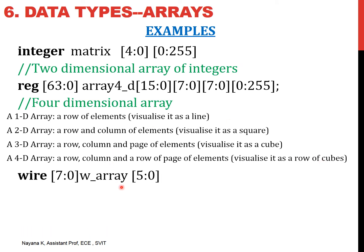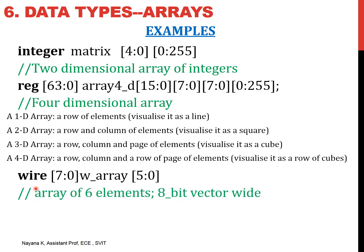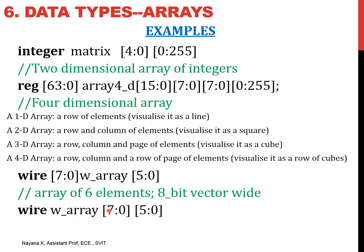We can also declare wire data type as an array. W_array declares an array having six elements — 5 to 0 — and each element is an 8-bit wide wire data type. So it declares an array of six elements where each element is 8 bits wide. This is a two-dimensional array having eight rows and six columns where each element is just one bit wide.